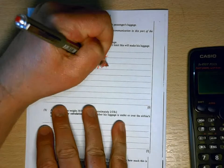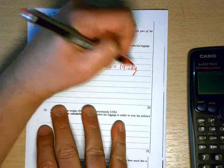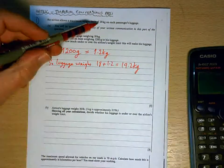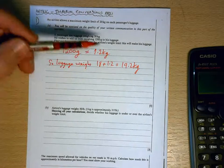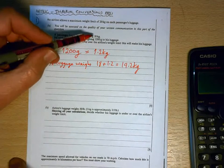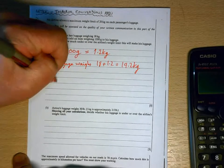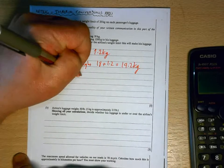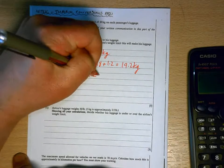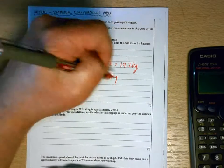18 plus 1.2 is 19.2 kilograms. So the limit is 20 kilograms, so he is okay, he's under that. And we can work out how much under it he is, so he is 20 minus 19.2, which is 0.8 kilograms under the limit.